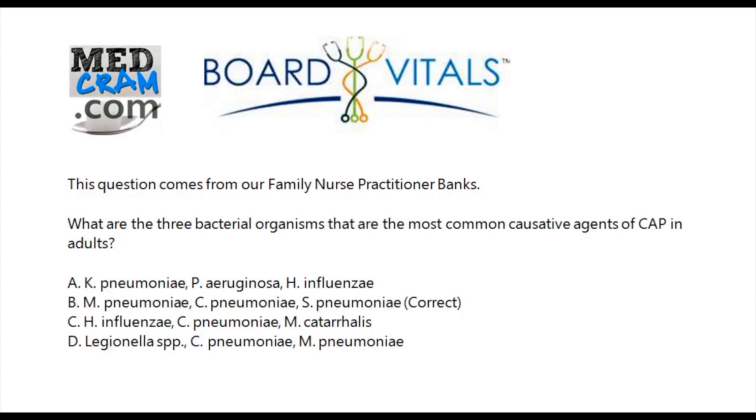C is Haemophilus influenzae, Chlamydia pneumoniae, and Moraxella catarrhalis. And D is Legionella species, Chlamydia pneumoniae, and Mycoplasma pneumoniae. So which one is the right answer? In this case, it's B, but the question is, why is it the right answer? So let's review that.